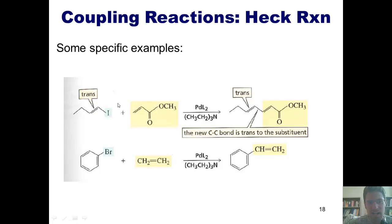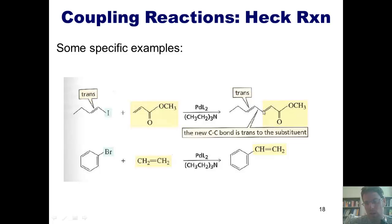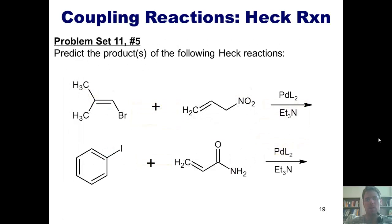Here are some specific examples. I've got this vinyl iodide reacting with this alkene, which is attached to all of this exciting stuff over here. I treat it with palladium L2 and triethylamine. What ends up occurring is I form a bond between the carbon that was formerly bonded to the iodine and the terminal carbon in my alkene, as you can see right here — all of this stuff ends up being trans to the other side when this bond forms. In the second example, I've got a phenyl bromide treated with ethene under Heck conditions, forming a bond between this carbon and one of the two carbons in the alkene. This brings us to some problem set questions — predict the products of the following Heck reactions. You're welcome to pause the video now and attempt them on your own first.